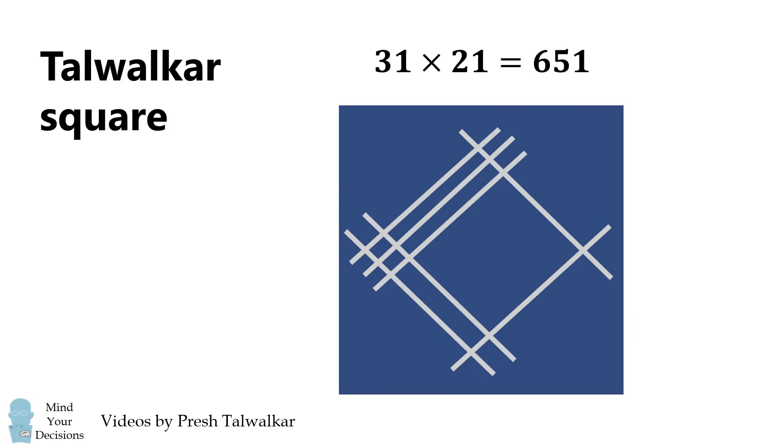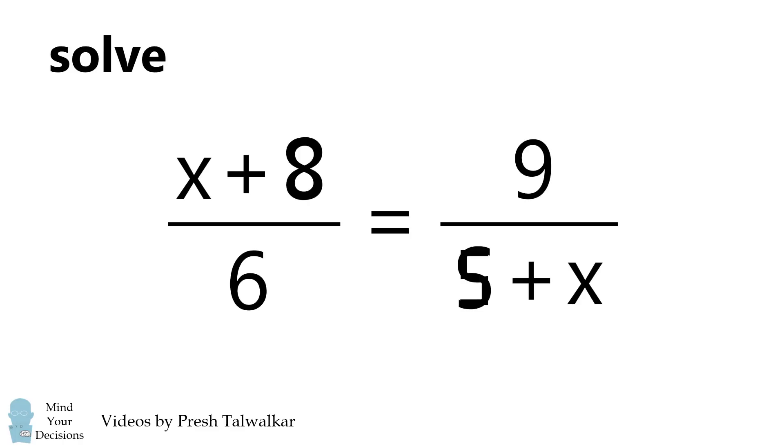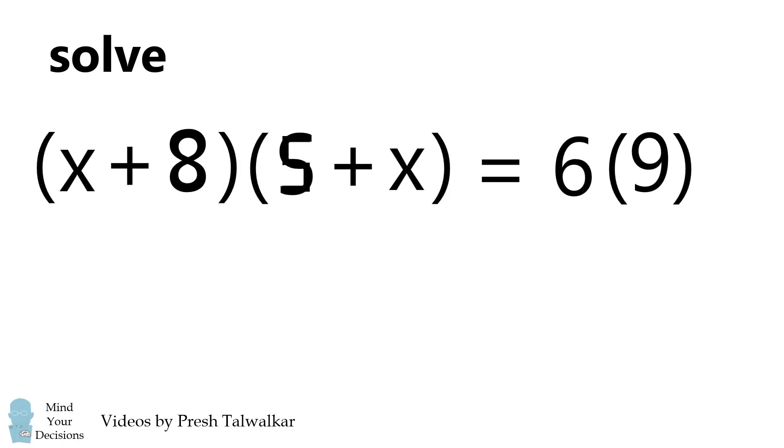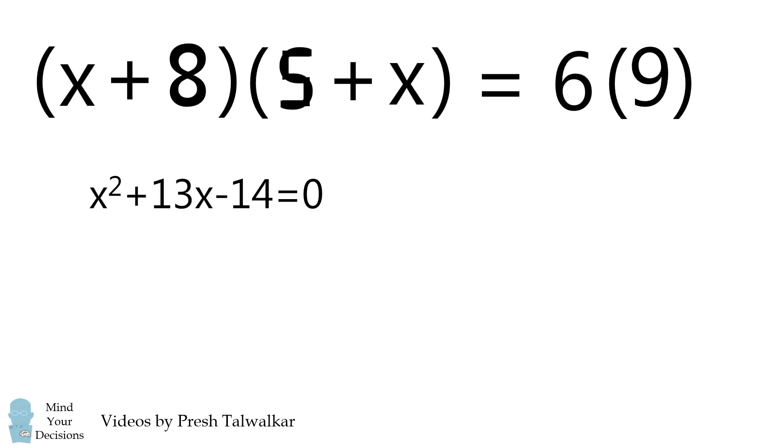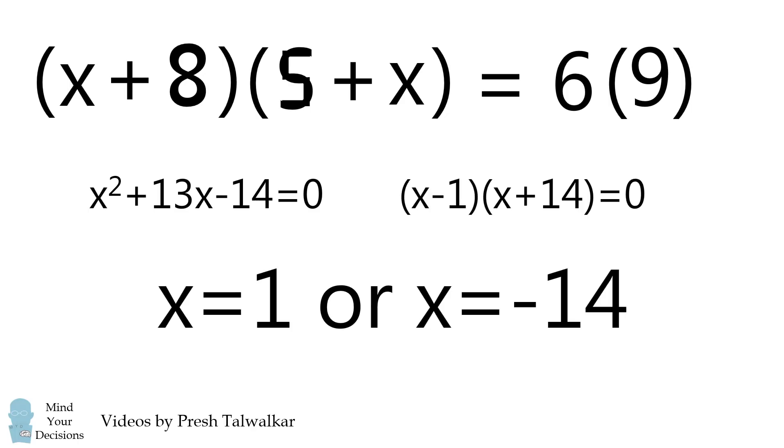So now let's return to the original problem. We'll solve it by cross multiplying, and then we're going to expand this binomial and simplify. We end up with a quadratic equation. We can solve this equation by factoring, and we get the two solutions x is equal to 1 and x is equal to negative 14.